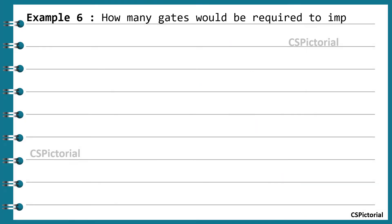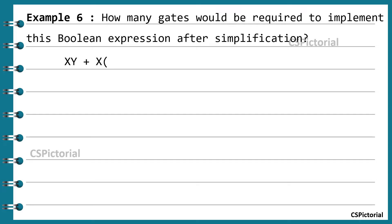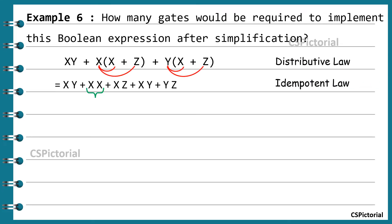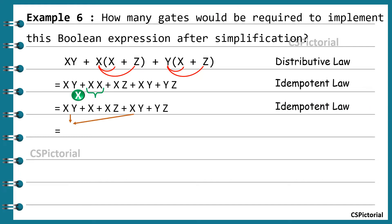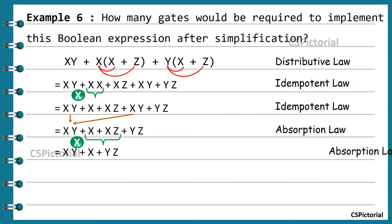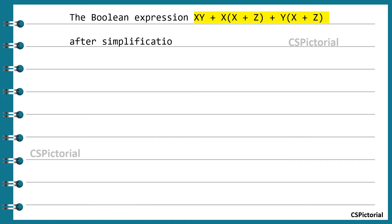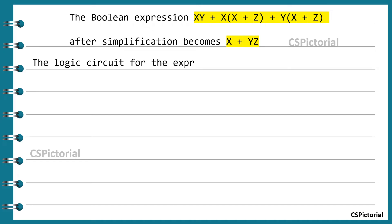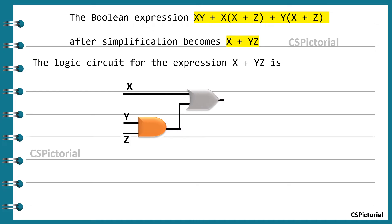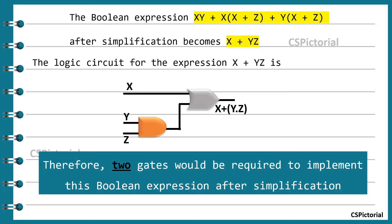How many gates are required to implement this Boolean expression after simplification? xy + x(x+z) + y(x+z). Applying appropriate Boolean laws at each step, the expression simplifies to x + yz. To implement this: an AND gate takes inputs y and z, and the output yz is then OR'd with input x. Thereby only two gates are required to implement this Boolean expression.